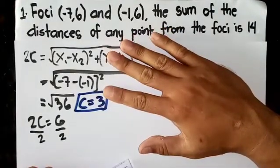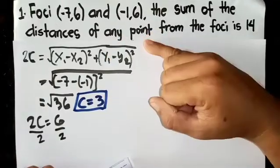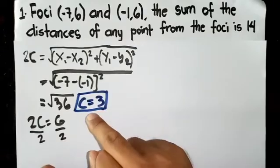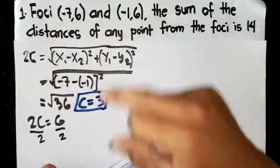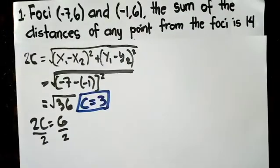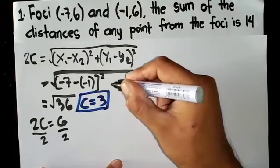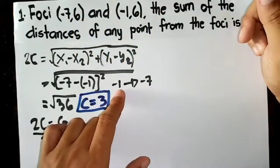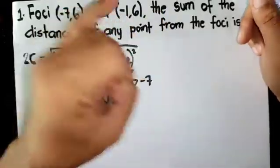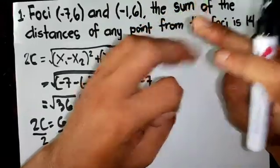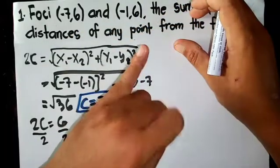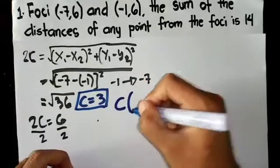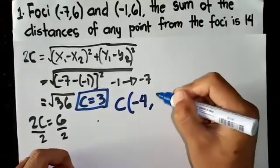Then, to get the equation of the ellipse, there are three important things. You need to know the center, a squared, and b squared. If you know these three, you can get the equation directly. So c equals 3. How do you get the center using this value c? So 3 units - from -1 to -7 the distance is 6. So move 3 units: -1, -2, -3, -4. So 3 units falls on -4. Or reverse it, start from -7: -6, -5, -4. So obviously, the center is (-4, 6).